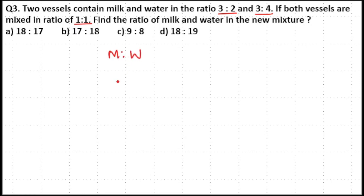Here milk and water in the first vessel is in the ratio 3:2, in the second vessel it is in the ratio 3:4. If you add 3+2=5 parts and 3+4=7 parts.